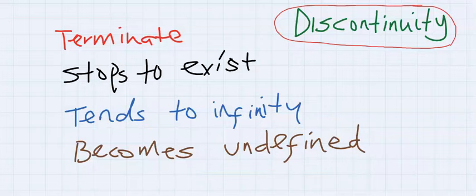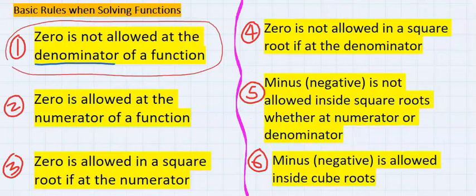Discontinuity can happen when 0 is found at the denominator of a function. Hence, 0 at the denominator will make a function terminate, that is, cease to exist.